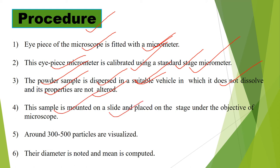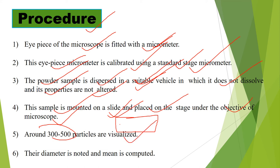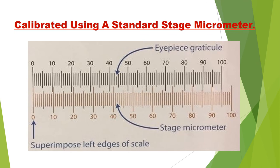The sample is mounted on a slide and placed on the stage under the objective of the microscope. We place our sample on the slide and visualize around 300 to 500 particles. The diameter of each particle is noted and the mean is computed. This is done using the calibrated standard stage micrometer scale.